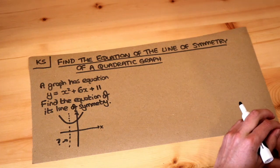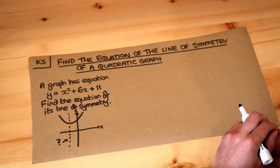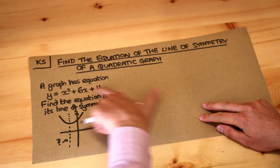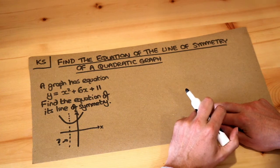Hello and welcome to Dr. Ross-Math's key skill video on finding the equation of the line of symmetry of a quadratic graph. So we have some quadratic curve with this equation, y equals x squared plus 6x plus 11.